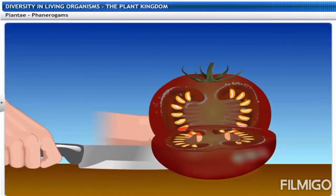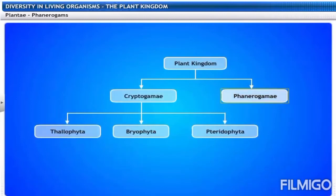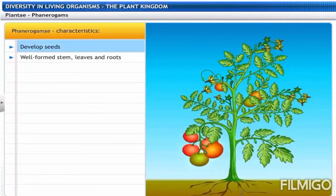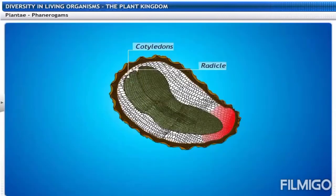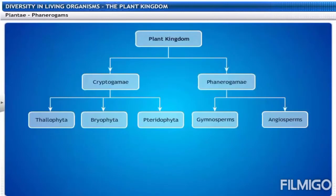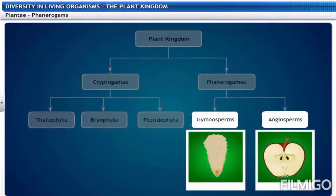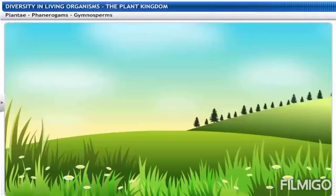A ripe tomato has lots of seeds inside, which are the result of a reproductive process called fertilization — making the tomato a phanerogam. All plants under Phanerogamae develop seeds and have well-formed stem, leaves and roots. Phanerogamae means visible reproduction. They contain an embryo along with stored food that helps the embryo grow and germinate. Based on whether seeds are naked or enclosed in fruits, Phanerogamae is further classified into gymnosperms and angiosperms.